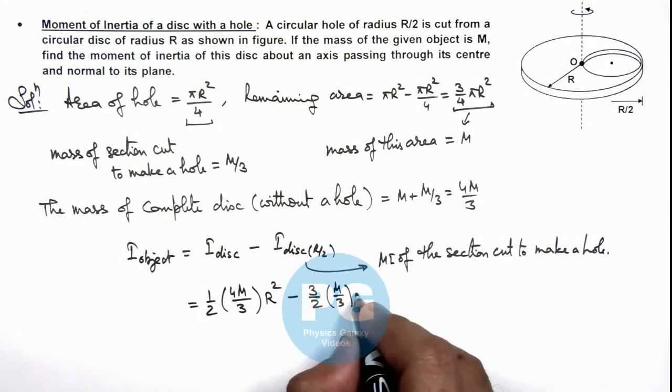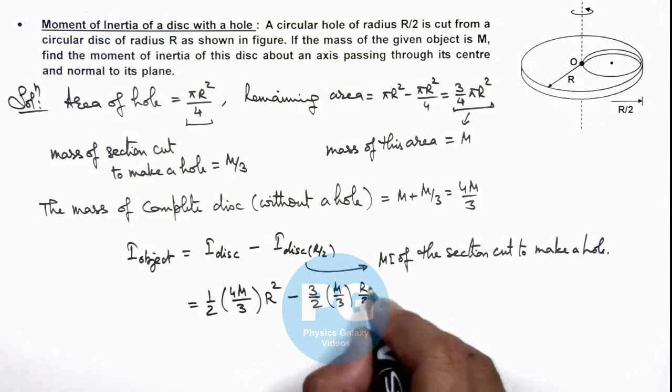mass is M/3 multiplied by its radius squared, so it is (R/2)².